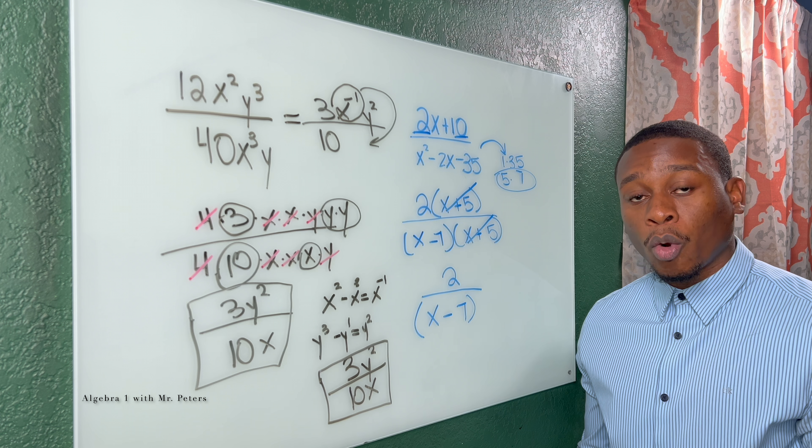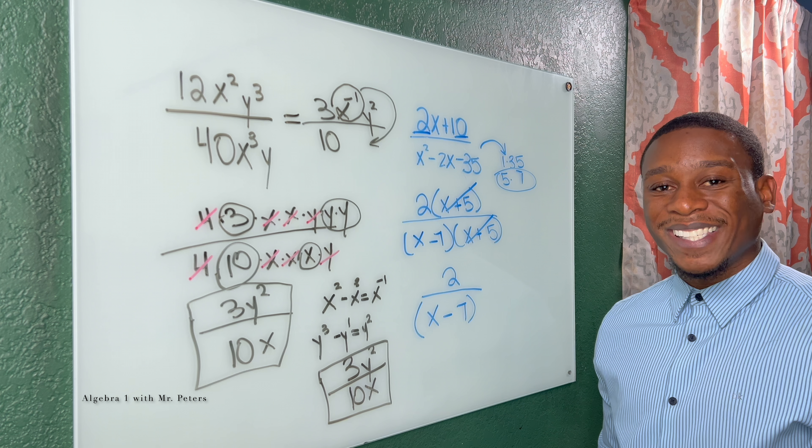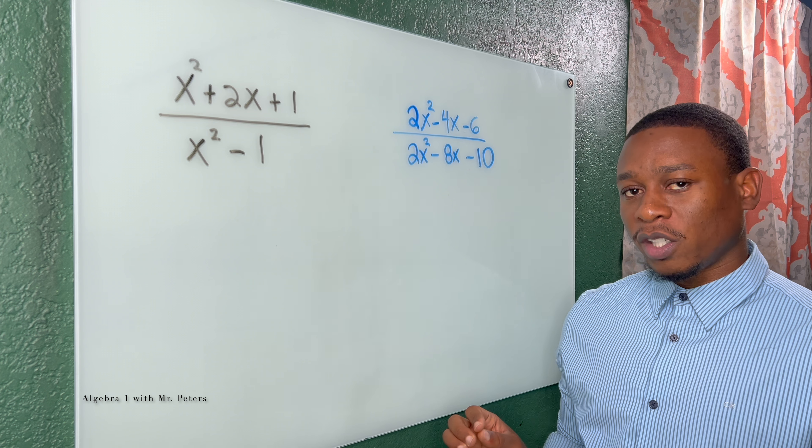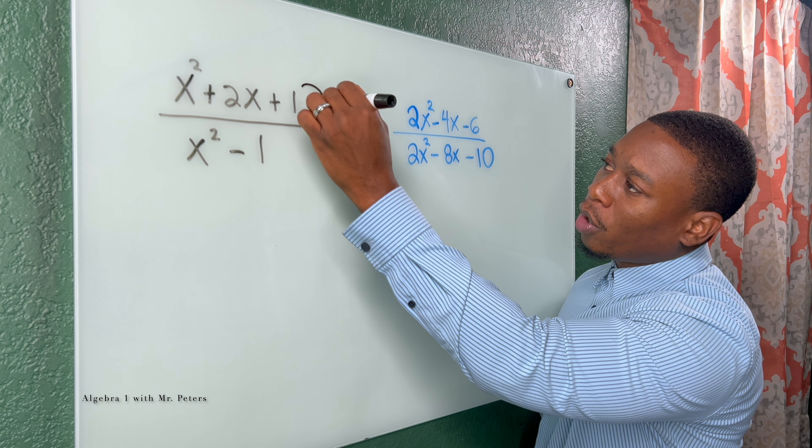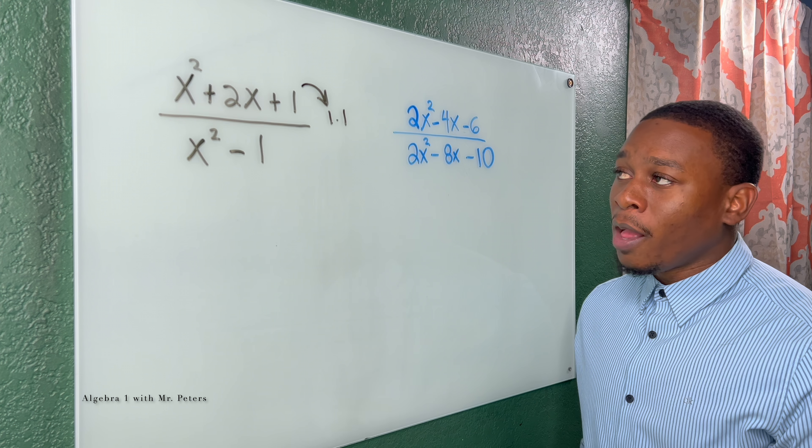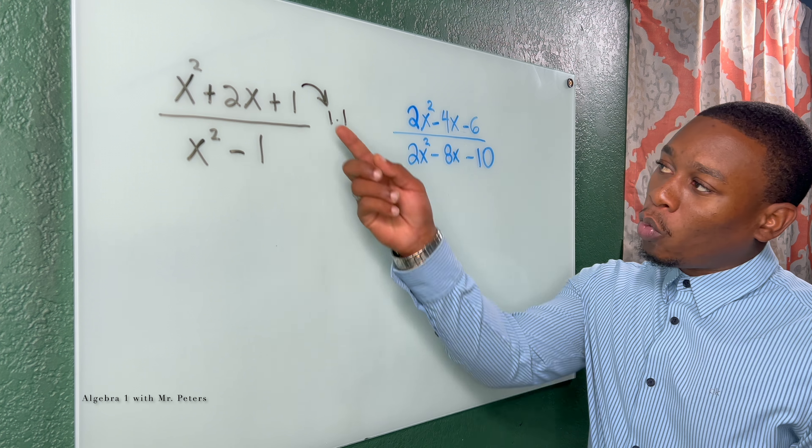And now we're going to go over to two more examples. In the next example, we have to kind of notice these two special cases. So yes, we know that our factors for 1 is just 1 times 1. And we should identify, I know that this is a perfect square trinomial. So we're going to have the same two factors.